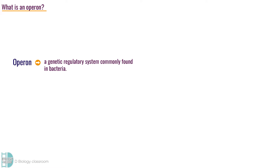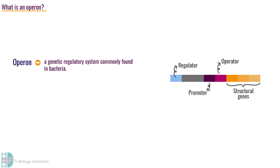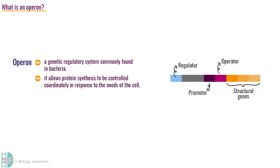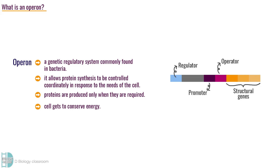An operon is a genetic regulatory system commonly found in bacteria. In an operon, genes coding for functionally related proteins are clustered along the DNA. This system allows protein synthesis to be controlled coordinately in response to the needs of the cell. In other words, the proteins are produced only when they are required. By doing this, the cell gets to conserve energy.